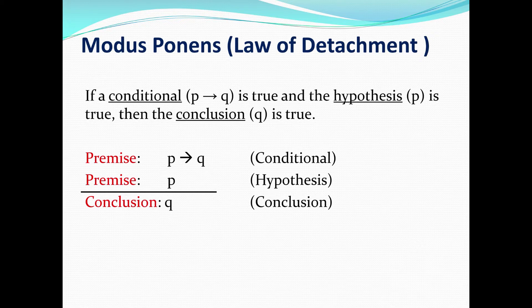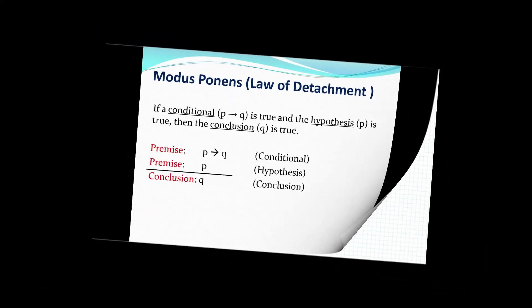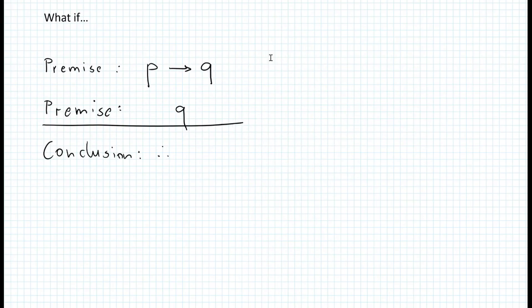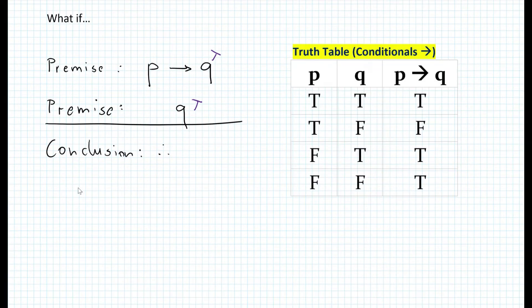Let me ask you a question. What if our second premise would say that Q was true? So basically, what if we have the following two premises: if P then Q, and then Q? Is there anything we can conclude here? Well, the two premises are true, so Q is true. Now, what does P have to be so that the conditional is true? Let's look at the truth table for conditional statements. In which cases are the premises true? If you look at the first premise, if P then Q — that has to be true — we actually have three different cases here.